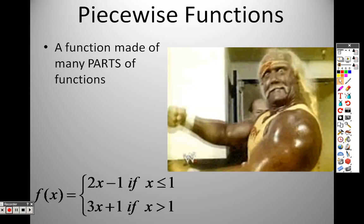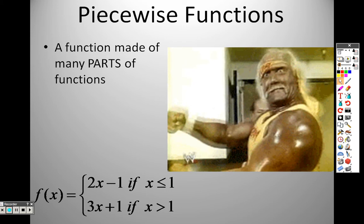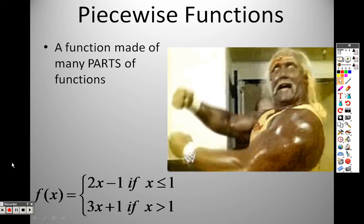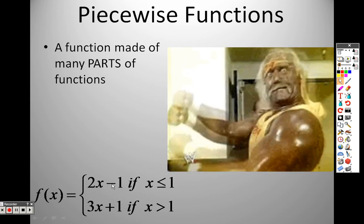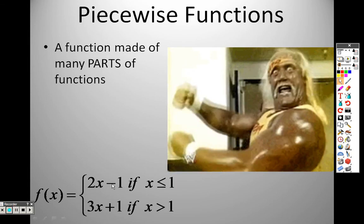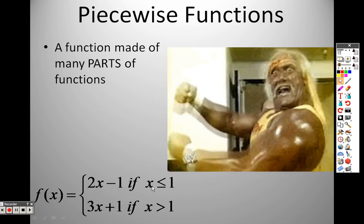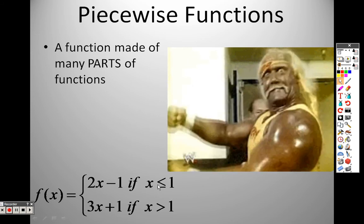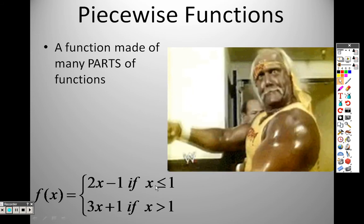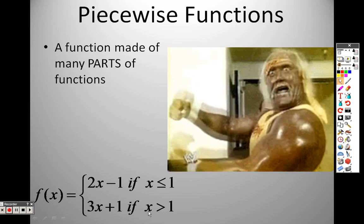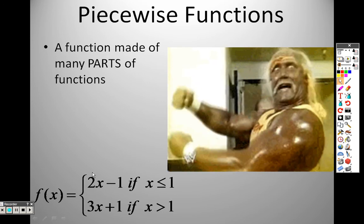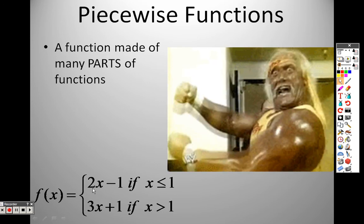Here is an example of one. What that means is: graph two x minus one, but only when x is less than or equal to one, and then graph three x plus one, but only when x is greater than one. You're only graphing a part of the first one and a part of the second one — that's what a piecewise function is.